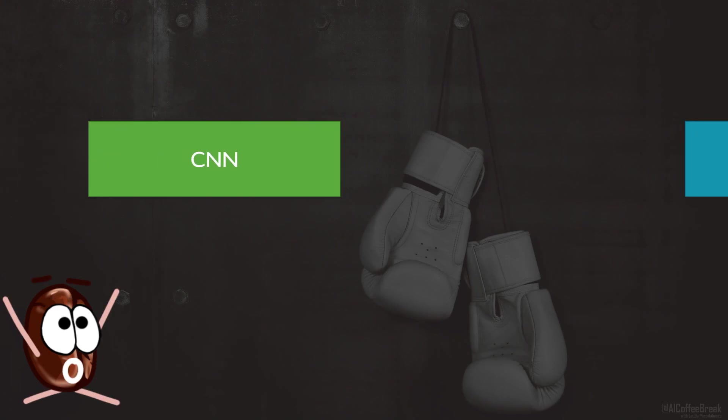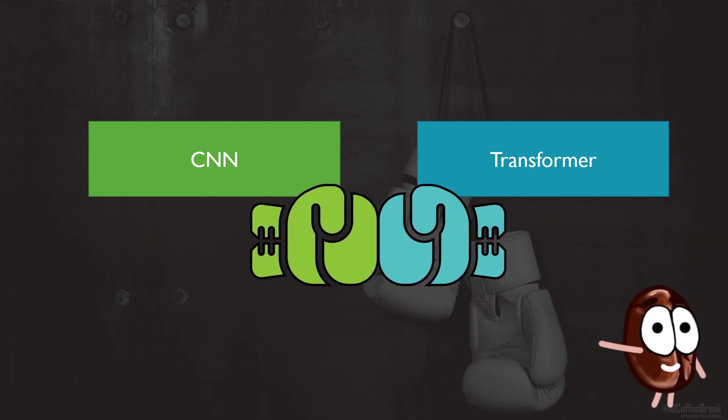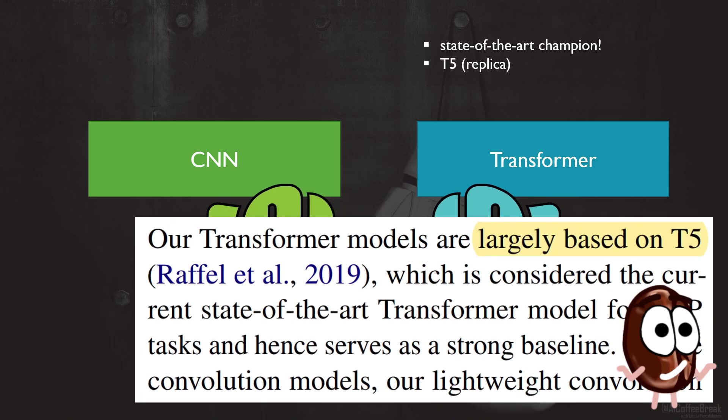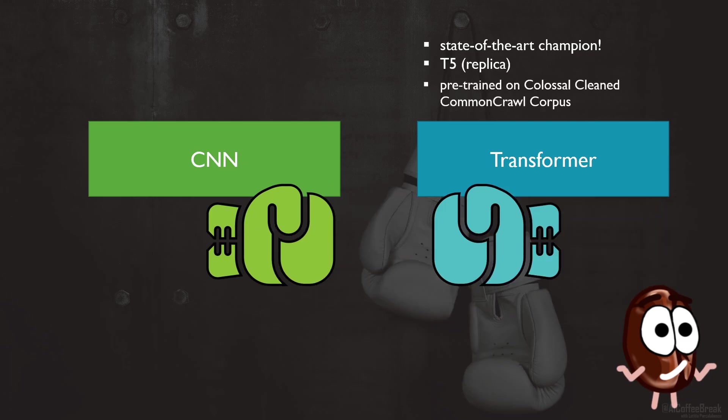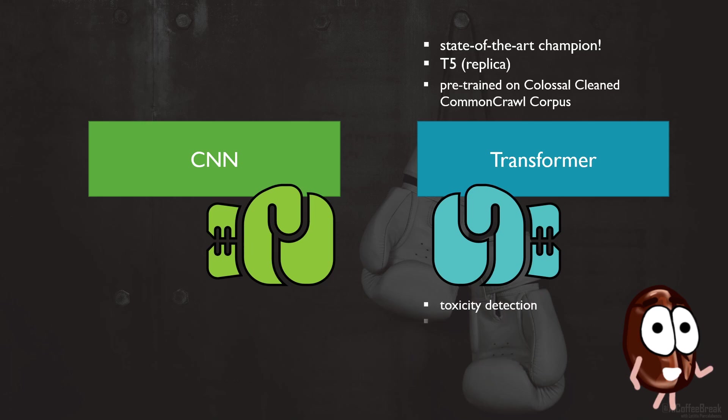To recapitulate the opponents of today's match: the CNN versus the transformer. In the right ring corner we have the transformer, the well-known champion, beating T5—well, at least a T5 replica pre-trained on the Colossal Cleaned Common Crawl corpus with span-based masking as a pre-training objective, which means that random spans composed of more words are masked and the model must fill in the blanks.